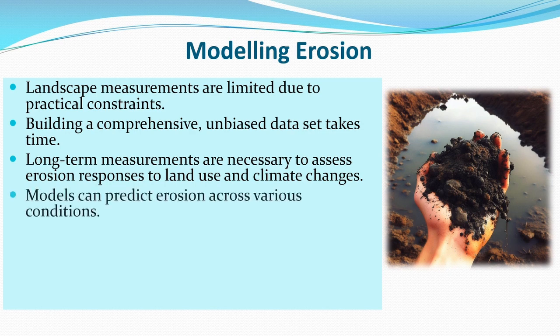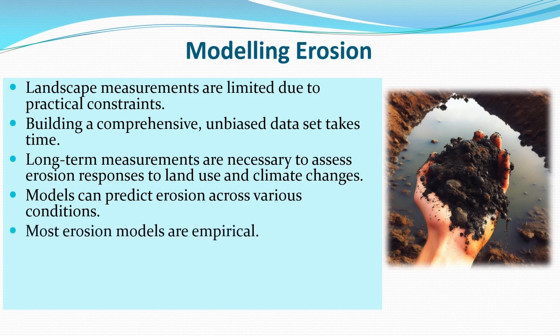For certain climates, the soil loss may be different in certain months — it may be quite high. It also depends on the type of land use: if the land is under dense vegetation, the soil loss may be less. You need to take continuous measurements in order to understand the area and the process of soil erosion. Models can predict erosion across various conditions.